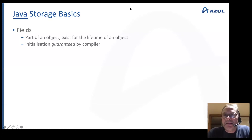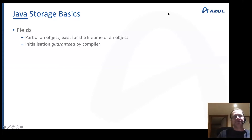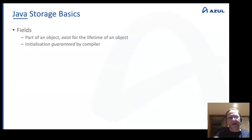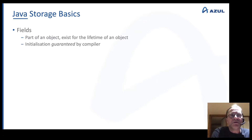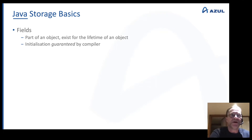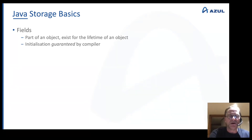The first thing we need to talk about is a little bit about the basics of how Java stores things. Java is an object-oriented language, so we have the concept of classes. Classes encapsulate things, and part of that is state, which we do through fields that we create. We have instance variables for our objects, and those exist for the lifetime of the object. The initialization is guaranteed by the compiler — a boolean field defaults to false, and a number defaults to zero.